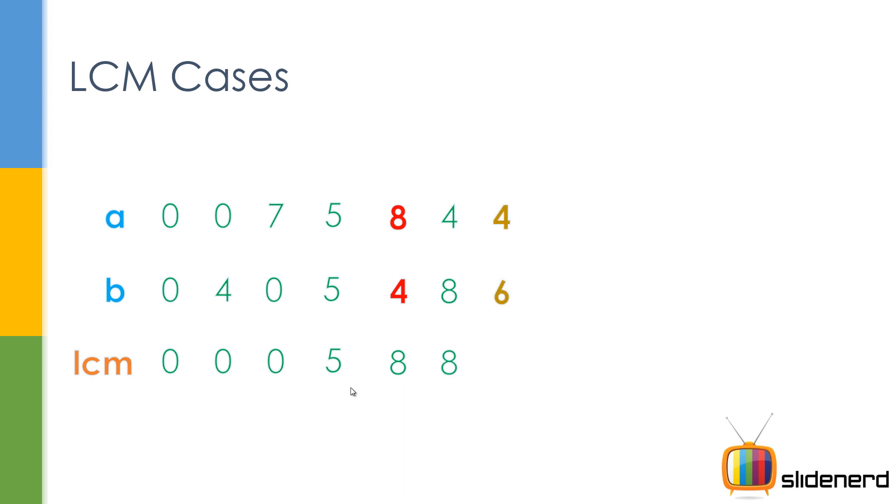And last but not the least, this is the general case for which we find LCM. Let's say 4 and 6 over here. In that case, the LCM becomes 12. We're gonna see how to do this, how to calculate this 12. 6 and 4, it doesn't matter which order the numbers are in, the LCM is still gonna be the same.